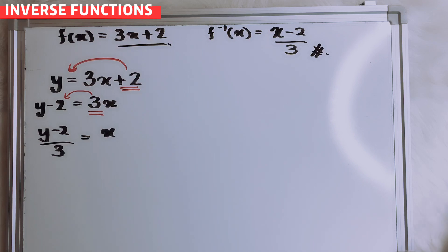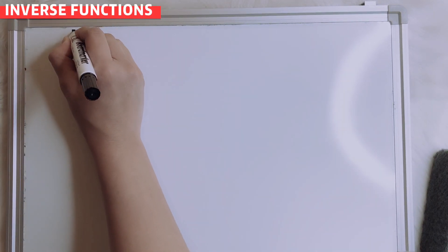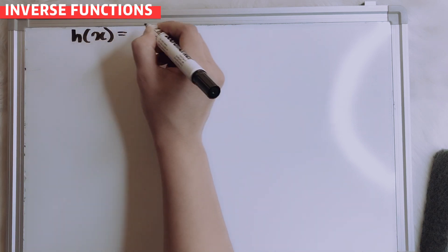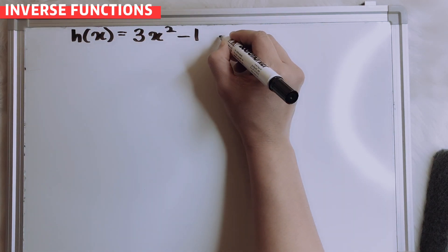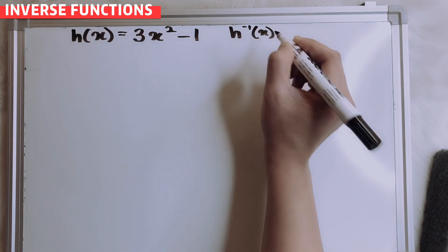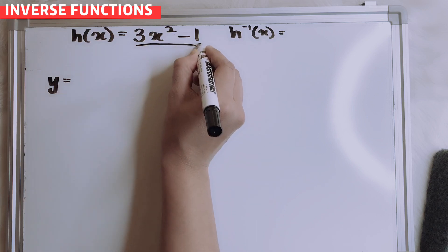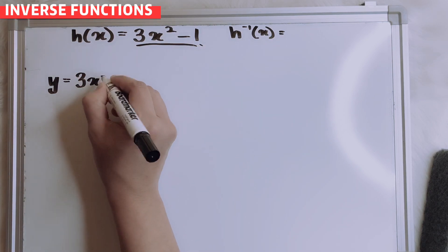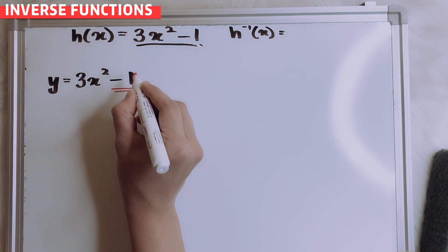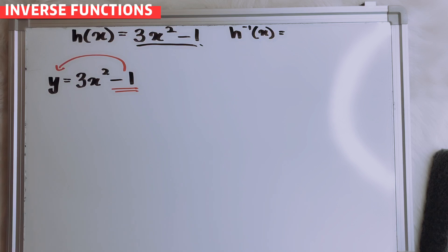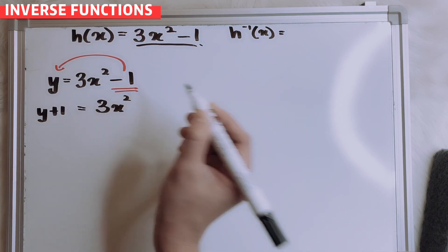Let's say I give you a different example. So let's say I give you h(x) equals to 3x squared minus 1. So first, we must put y equals to this equation. It is 3x squared minus 1. Then I want to move minus 1 to this side — opposite, so it will be y plus 1 equals to 3x squared.